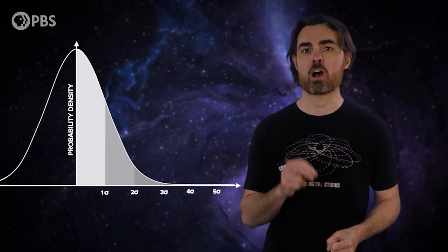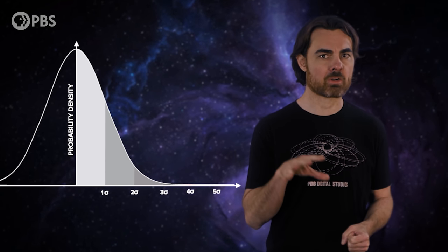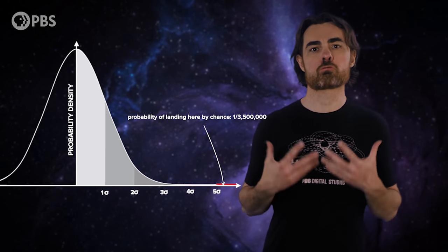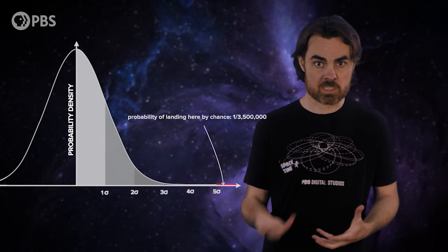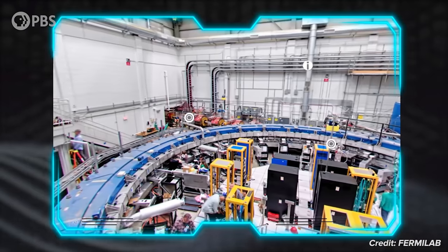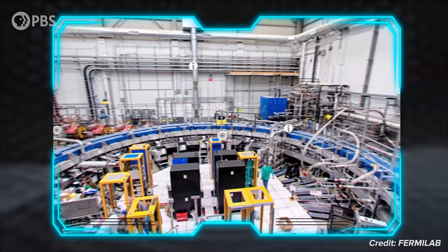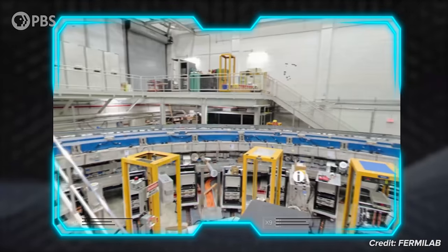Physicists, however, prefer a 5 sigma signal before declaring a discovery. For 5 sigma, there's only 1 in 3.5 million chance of random noise resulting in the same signal. The muon g-2 experiment at Fermilab hopes to push closer to this level of confidence, and is designed to achieve 4 times the sensitivity of the Brookhaven experiment.